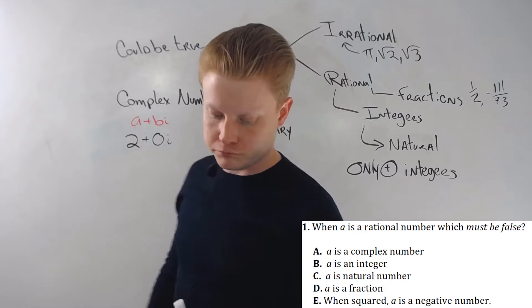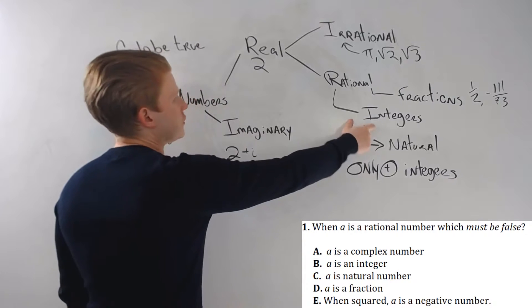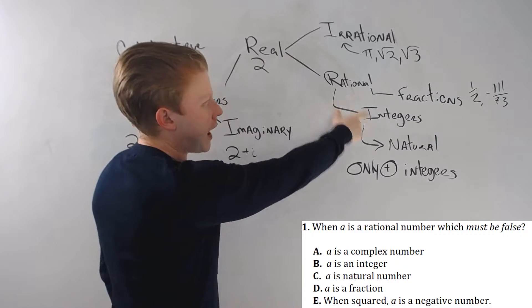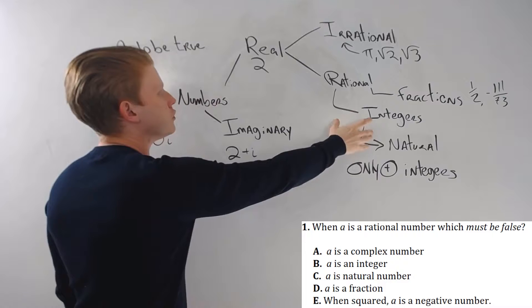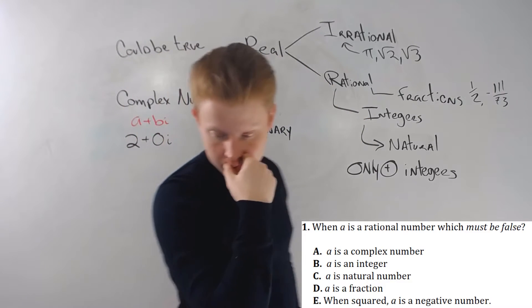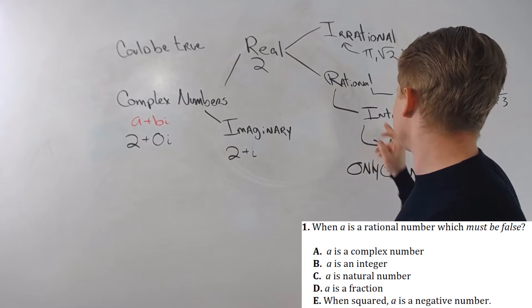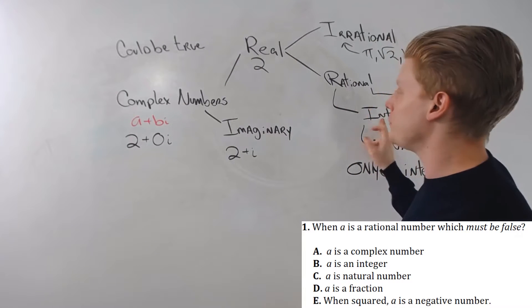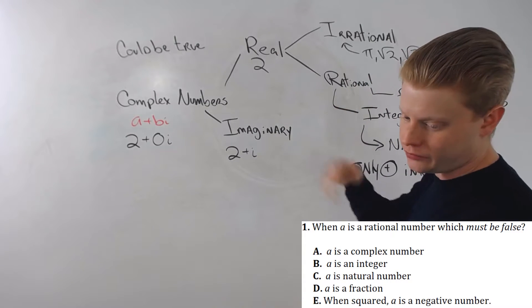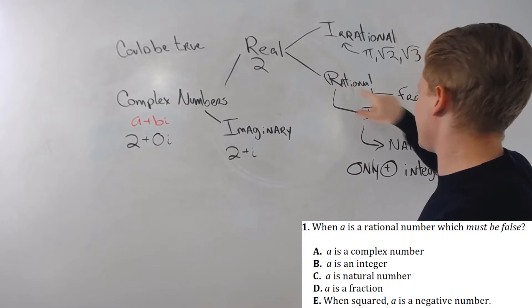A is an integer — well, it could be, right? Integers are a subset of rational numbers, so it doesn't have to be true, but it could be. A is a natural number — sure, natural numbers are subsets of integers, which are subsets of rational numbers, so that's fine, could be true. A is a fraction — sure, fractions are rational numbers, so that could be true as well.